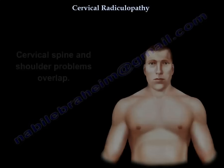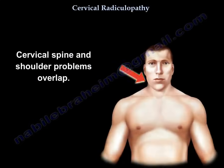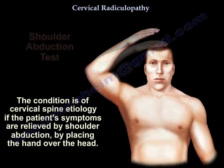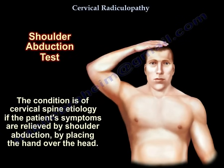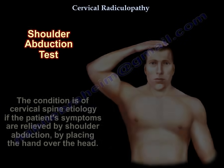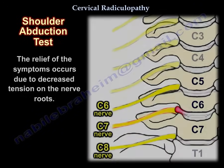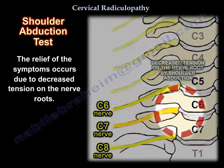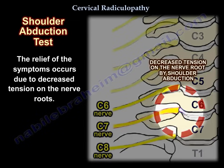The cervical spine and shoulder problems overlap. You know that the condition is of cervical etiology if relief of the pain occurs with shoulder abduction by placing the hand over the head. The relief of the symptoms occurs due to decreased tension on the nerve roots.